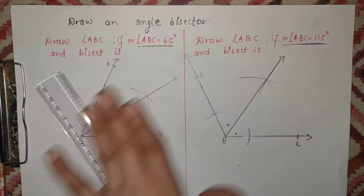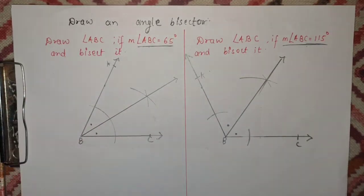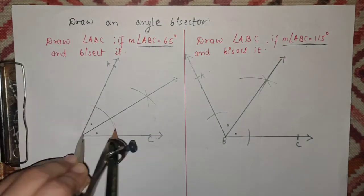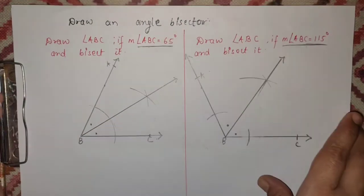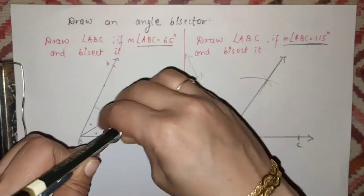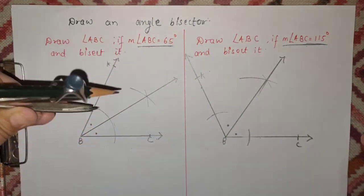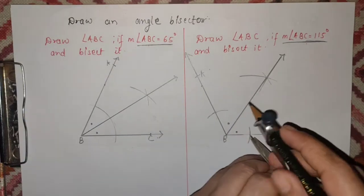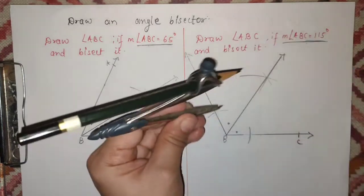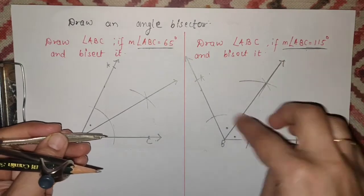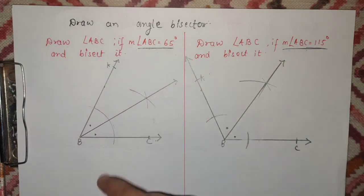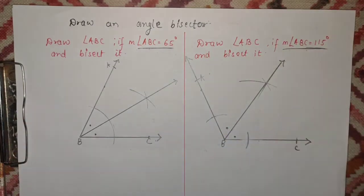So students, this way — you keep the compass at B, take any measurement, cut one arc on both rays of the angle, take any measurement from that arc, cut the intersecting arc, don't change the measurement, keep it on the other arc, cut it — and join. The measurement must be the same for both cuts. This is a two-mark question — it comes in question number 2. Now let us move to the next part.